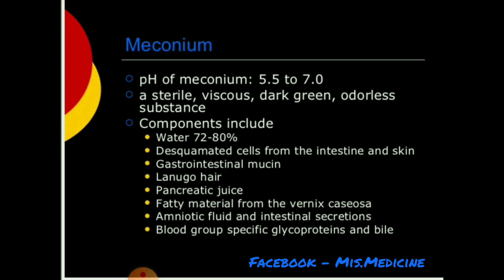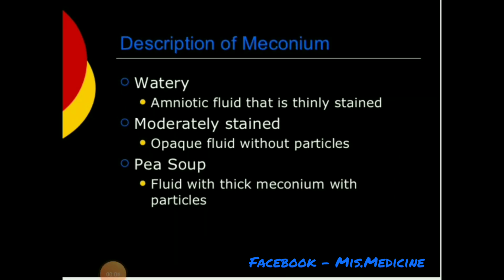Meconium also contains vernix caseosa, amniotic fluid, intestinal secretions, blood group-specific glycoproteins, and bile. Meconium can be described as watery (lightly stained), moderately stained (opaque fluid without particles), or pea soup (thick meconium with particles).